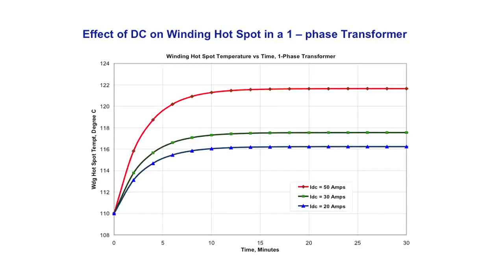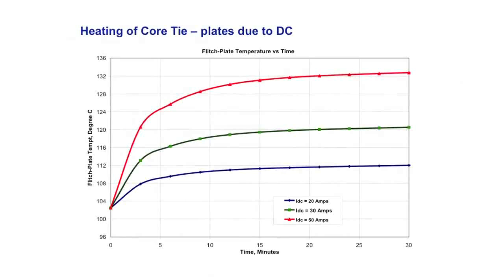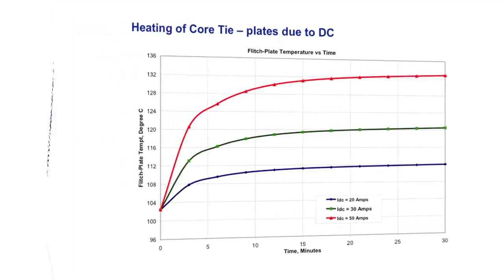For the structural parts — what we call the flitch plate or tie plate — the same phenomenon occurs: starting from a hot spot temperature, it rises and takes longer to stabilize because the thermal time constant of metallic structural parts is longer than that of windings. This was the effect of DC; now, how does this apply to the effect of GIC?